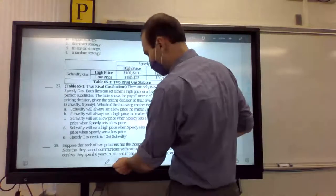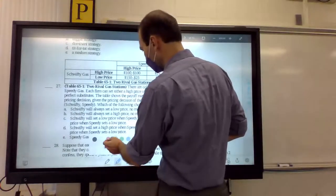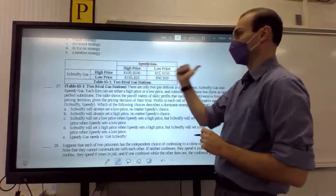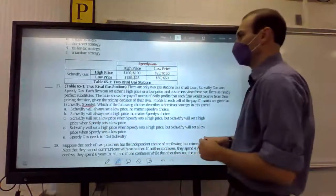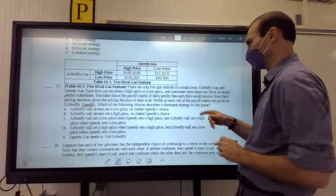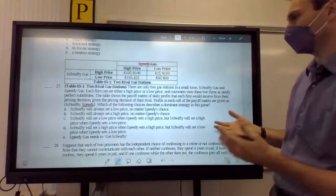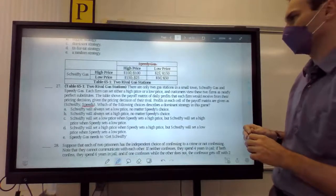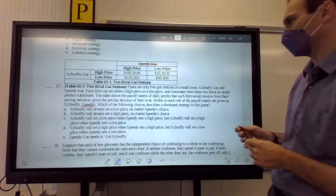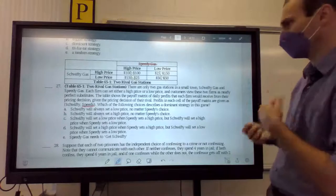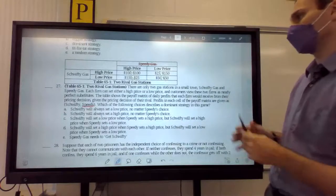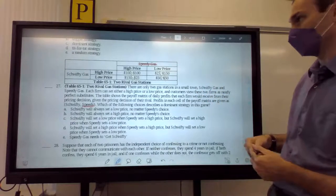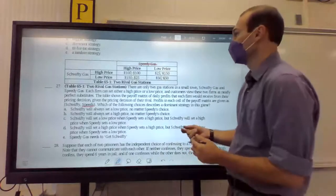Okay. So, let's say that if we are, let's say Speedy Gas. Speedy Gas is the second one right here. So, let's go ahead and just solve for this matrix. So, it says two gas stations in a small town. We got Schwifty, Speedy Gas. Each firm can set a high price or a low price. The customers view these two firms as nearly perfect substitutes. The table shows the payoff matrix with daily profits each firm receives from their price decision. Given the price decision of their rival, profits in each cell are given as Schwifty comma Speedy, which one best describes the dominant strategy in this game? So, let's find out their strategies.